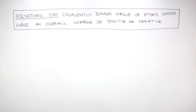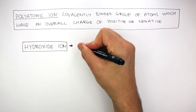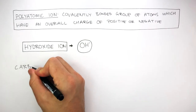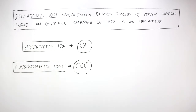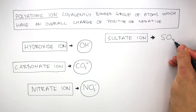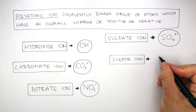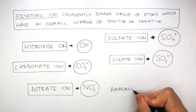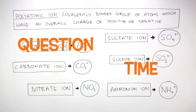Polyatomic ions which you need to know include: a hydroxide ion with the formula OH-, a carbonate ion with the formula CO3 2-, a nitrate ion with the formula NO3-, a sulfate ion with the formula SO4 2-, a sulfite ion with the formula SO3 2-, and an ammonium ion with the formula NH4+.